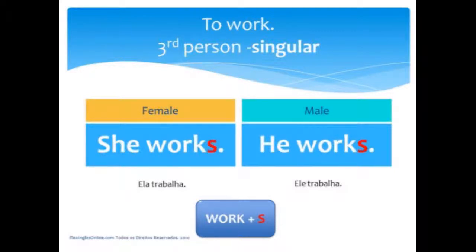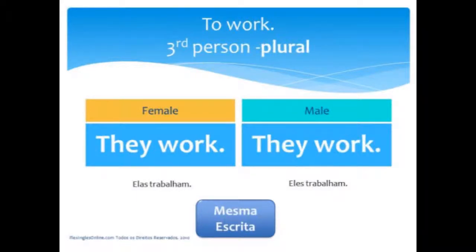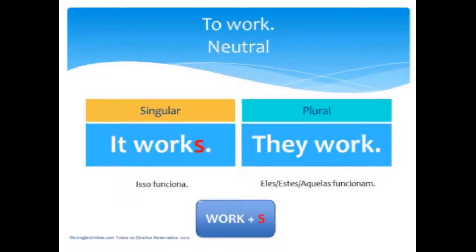Na terceira pessoa do singular you always have the S after the verb. 'She works' and 'he works.' Now in the third person plural, female and male are the same: 'they work' and 'they work' — no S, no S no final do verbo. The neutral form, used for objects and things, is 'it works' in the singular. In the plural of the neutral form we have 'they work' — no S.